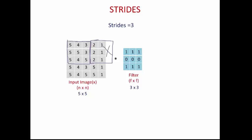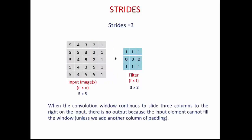Similarly, if you move the filter 3 pixels down, the filter is hanging outside again, and the operation cannot be performed. When the convolution window slides 3 columns to the right, there is no valid output because the input cannot fill the window unless we add padding. So in this example you get a 1×1 output. Since the formula result is not an integer, the output dimension is rounded down to the nearest integer — that is, 1×1.